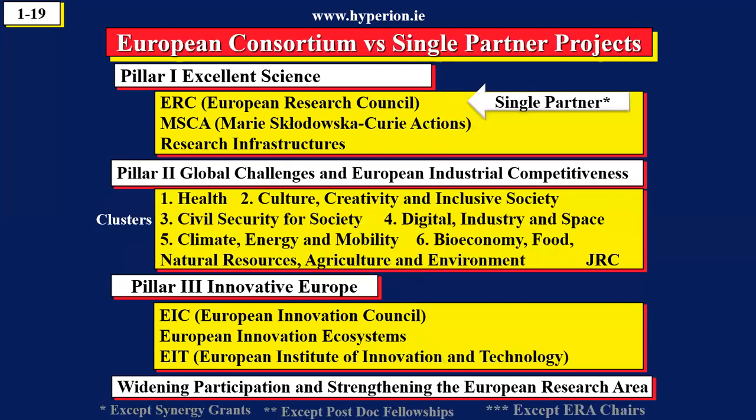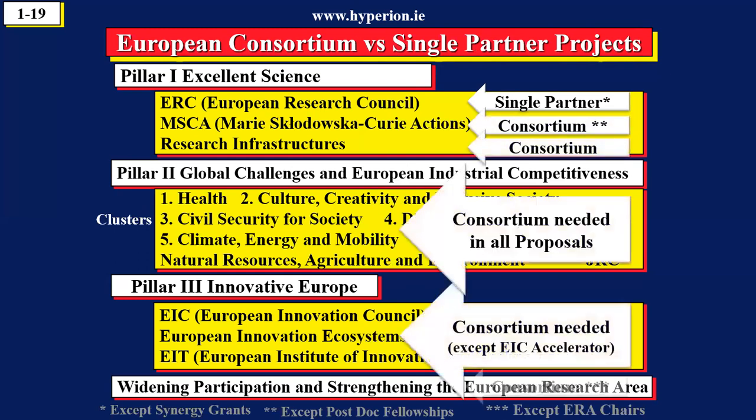The next thing you must consider is: do I need partners? In Horizon Europe, a partner is an organization — it's not a person. We can see that ERC is mainly single-partner projects, whereas all the other programs, with some exceptions, involve a consortium. In Pillar 2, 99% of the proposals involve a consortium.